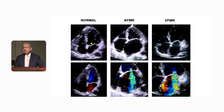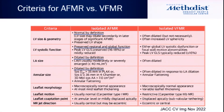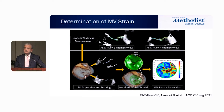Normally the mitral valve has to have a concave structure towards the atrium, and if it straightens out you know that the mitral valve is tethered. This happens in both ventricular mitral regurgitation and atrial mitral regurgitation. You could see the difference: the atria are very large, usually the substrate is atrial fibrillation or diastolic dysfunction of the ventricle, where the atria and the annulus are so enlarged.